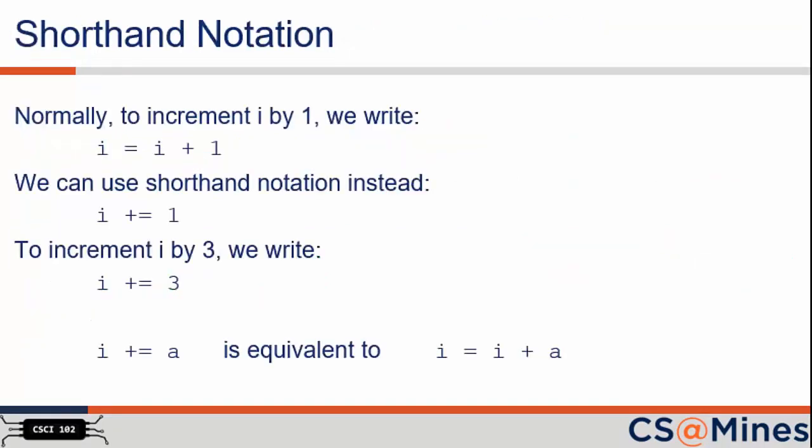Thus far, you've been incrementing a variable by one with, for example, i equals i plus one. In shorthand notation, you can just write i plus equals one. Shorthand notation saves you a few keystrokes each time you use it, which saves you a little bit of time. Also notice that shorthand notation isn't only limited to the number one, as shown on the second half of this slide.